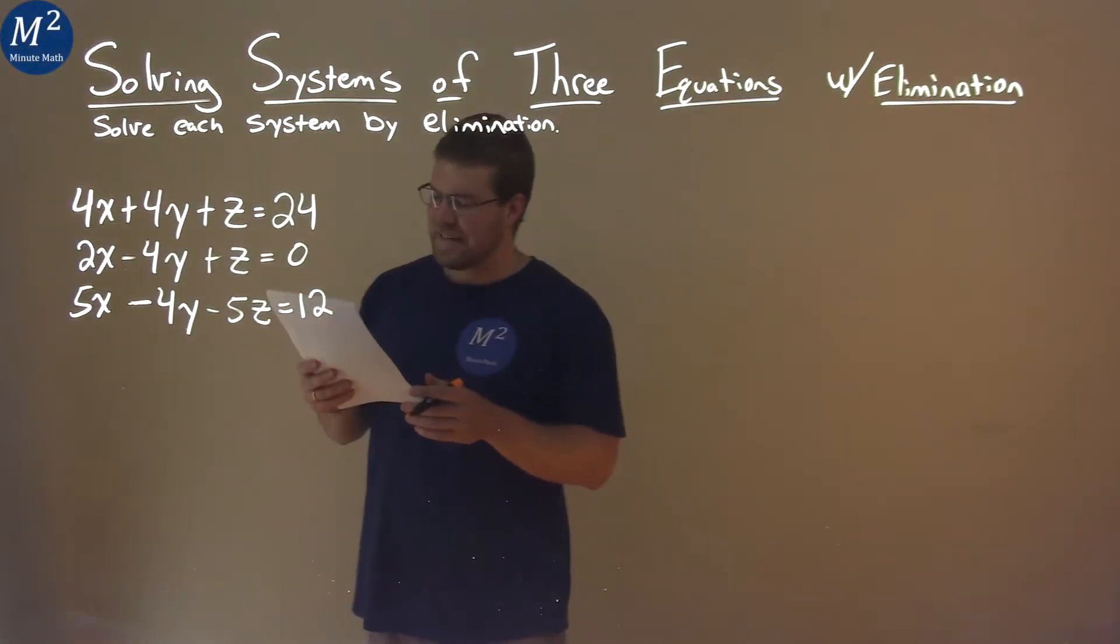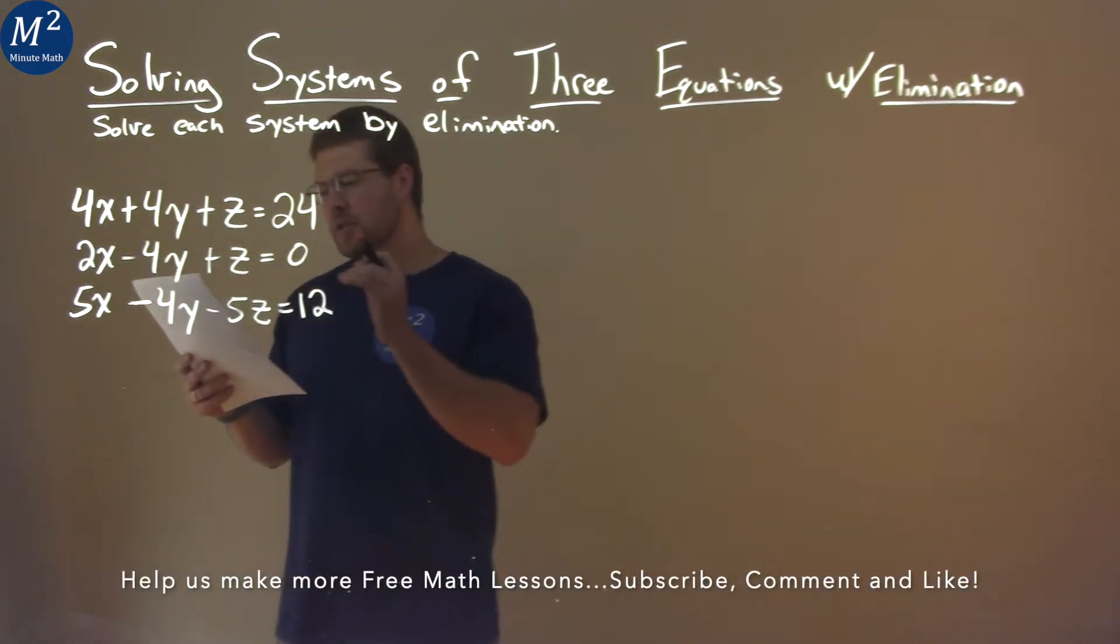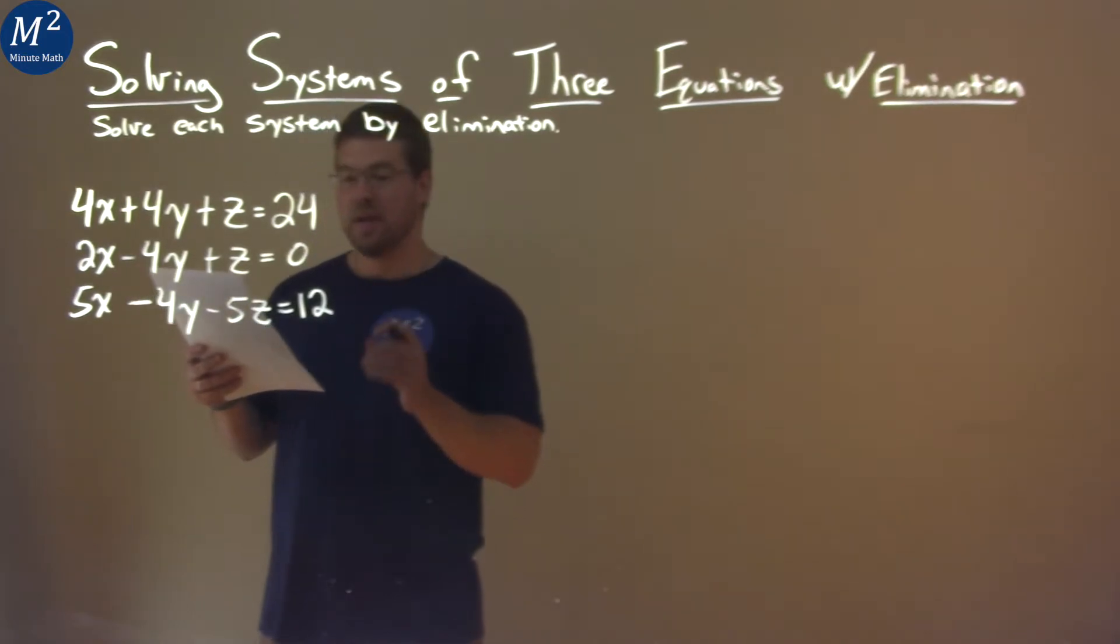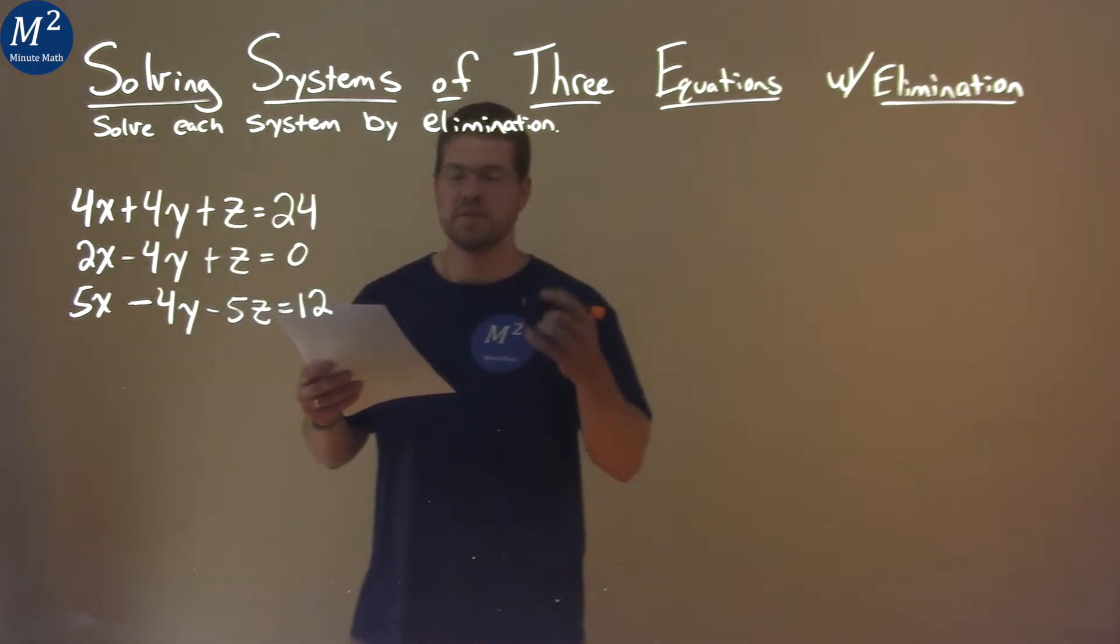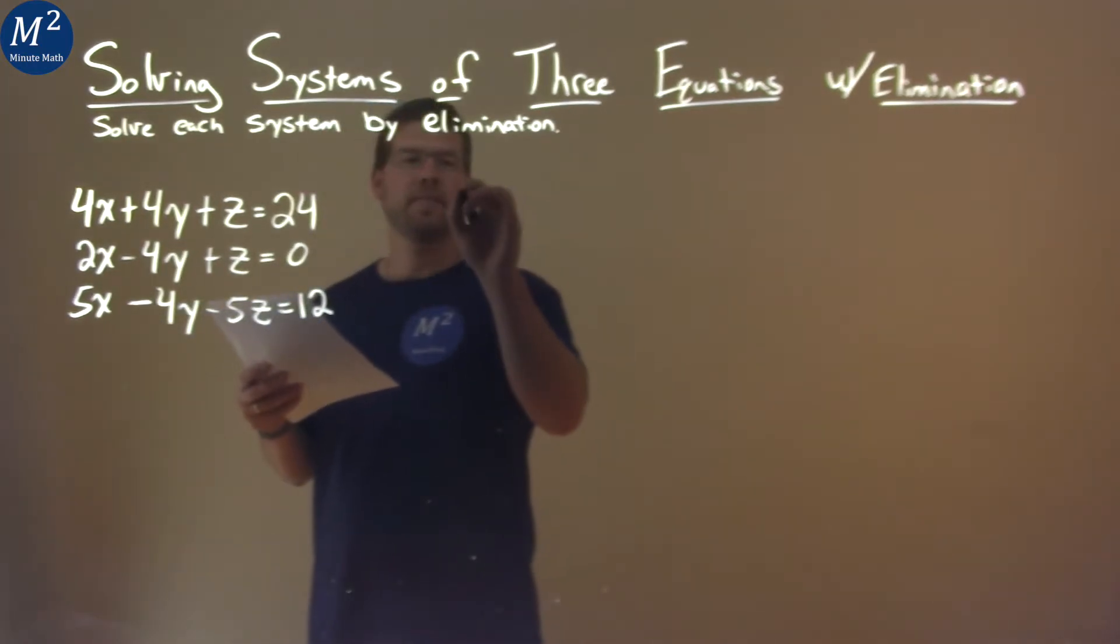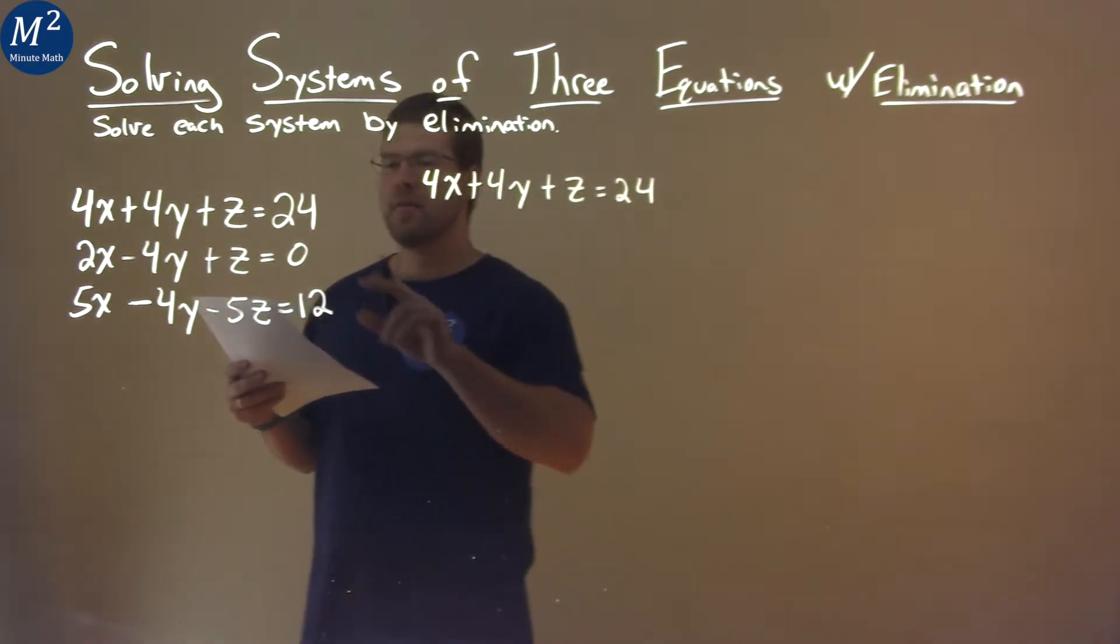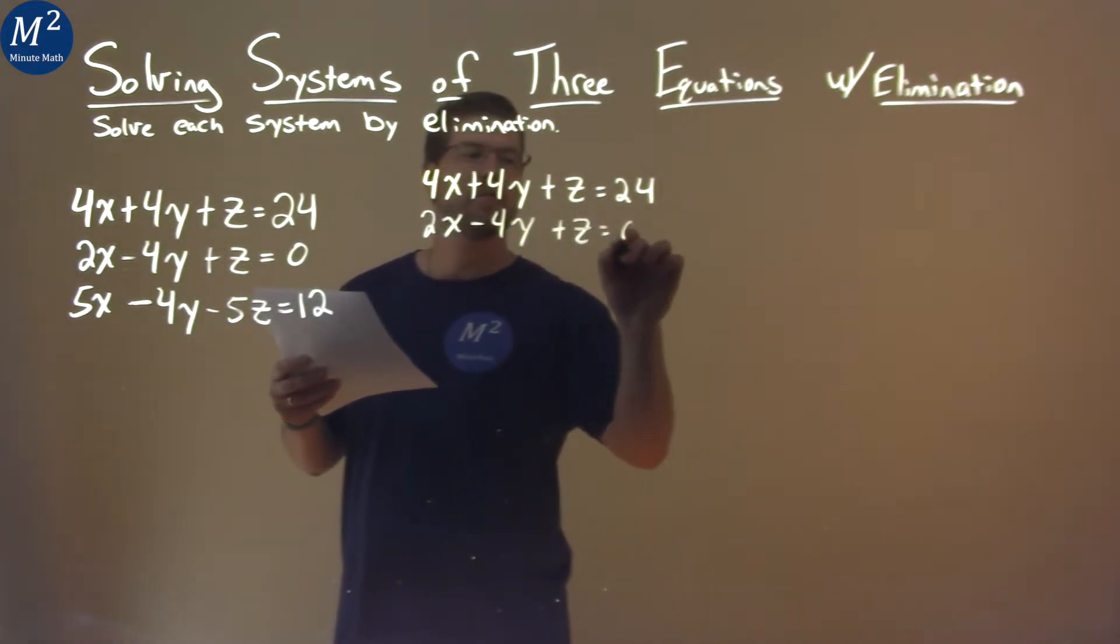We're given this problem right here. 4x plus 4y plus z equals 24. 2x minus 4y plus z equals 0. And 5x minus 4y minus 5z equals 12. And we want to solve this by elimination. We want to find two equations that when we add them together, some variable eliminates. I can see in my first two equations we can do that. If we rewrite this, 4x plus 4y plus z equals 24, and the second equation, 2x minus 4y plus z equals 0.